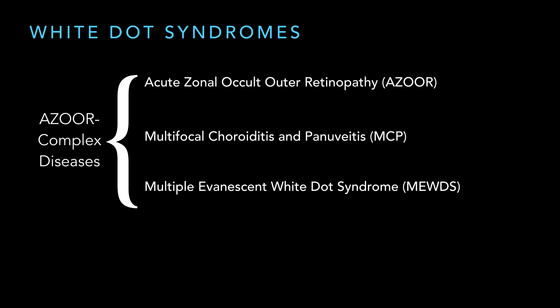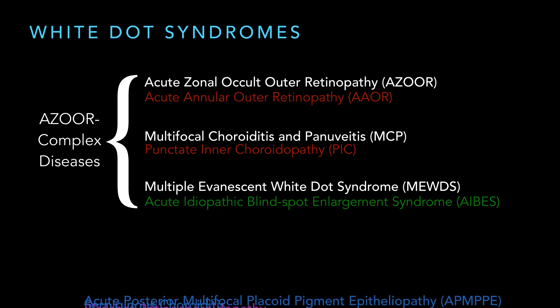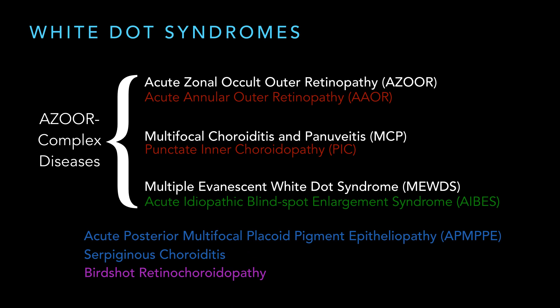Once I get past these three on this triangle — I think of this as three points to the triangle — I think each one has like a little sister, a younger brother that they take care of. So AZOR has AAOR, which actually has manifestations that are easy to see. MCP has PIC. You could find so many case reports of people showing up with MCP and then having PIC later on, or AZOR and then MUDES. And then MUDES — the little red-headed stepchild sister — is the acute idiopathic blind spot enlargement syndrome. These other three don't really relate to each other quite the same way, and they certainly don't relate to AZOR complex, so I put them outside of that category altogether. You've got AMPPE, acute posterior multifocal placoid pigment epitheliopathy, serpiginous choroiditis, and birdshot retinochoroidopathy.